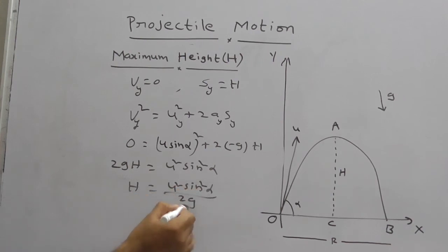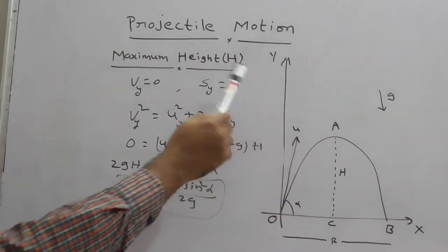Therefore the maximum height of the particle in projectile motion is H = u² sin² α / 2g. So in this session we discussed capital T, R, and H formulas. These three are very useful formulas in solving projectile motion based questions.